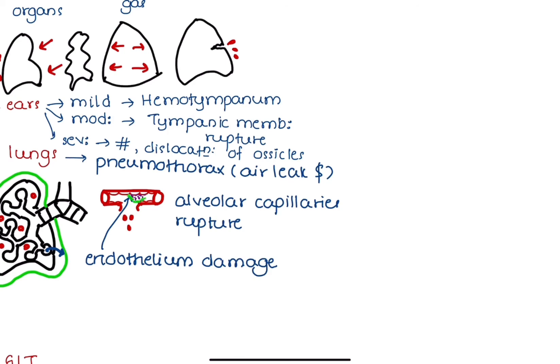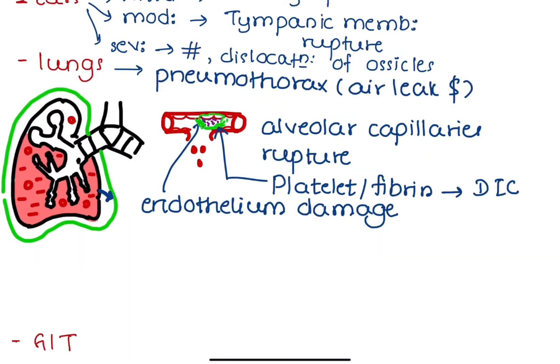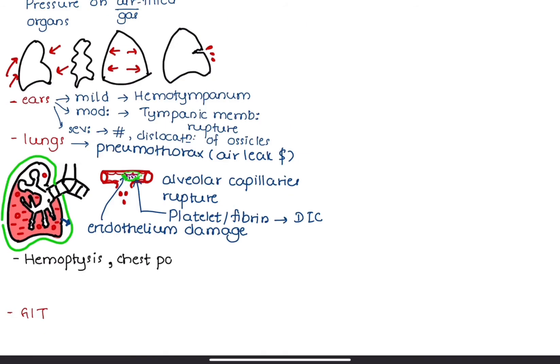Rupture of the alveolar capillaries and damage to the endothelium activates the hemostatic mechanism. Deposition of platelet and fibrin onto the damaged endothelium causes consumption coagulopathy or DIC. Blood is extravasated from alveolar vessels into surrounding tissues, compressing the alveoli, causing respiratory symptoms like hemoptysis, chest pain, dyspnea, and wheeze.